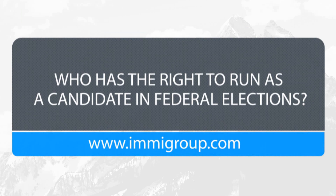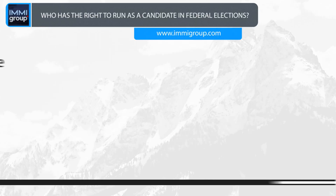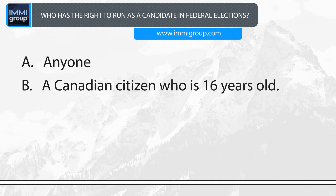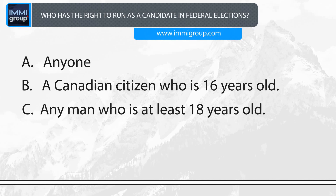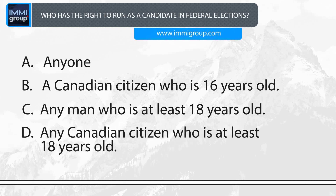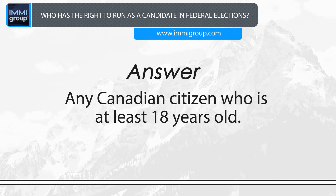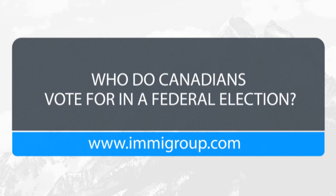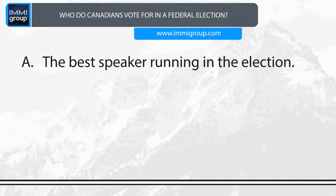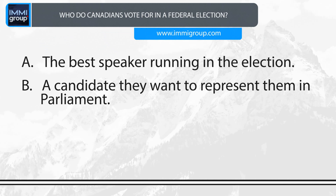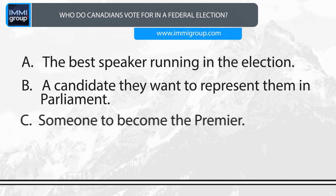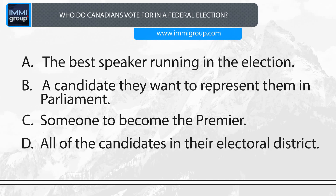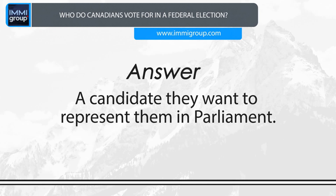Who has the right to run as a candidate in federal elections? A. Anyone. B. A Canadian citizen who is 16 years old. C. Any man who is at least 18 years old. D. Any Canadian citizen who is at least 18 years old. Answer: Any Canadian citizen who is at least 18 years old. Who do Canadians vote for in a federal election? A. The best speaker running in the election. B. A candidate they want to represent them in Parliament. C. Someone to become the Premier. D. All of the candidates in their electoral district. Answer: A candidate they want to represent them in Parliament.